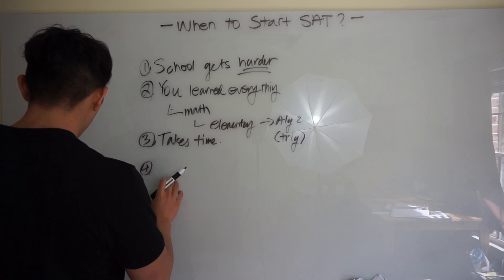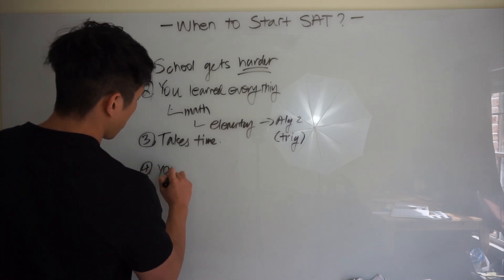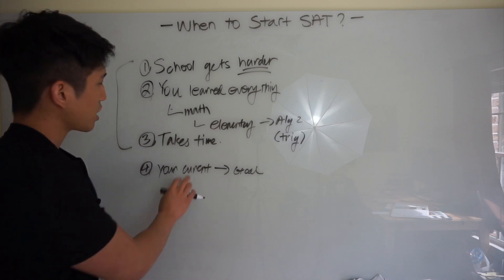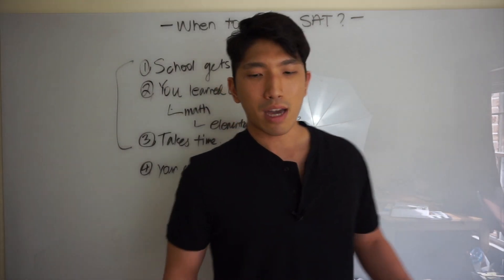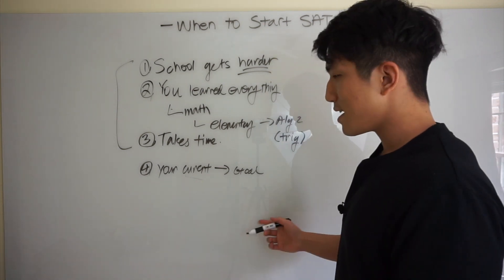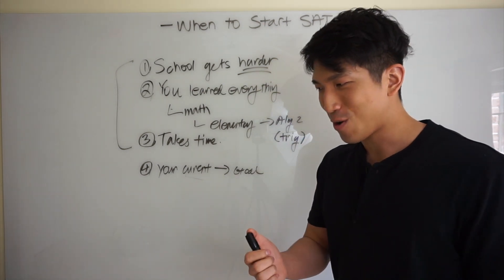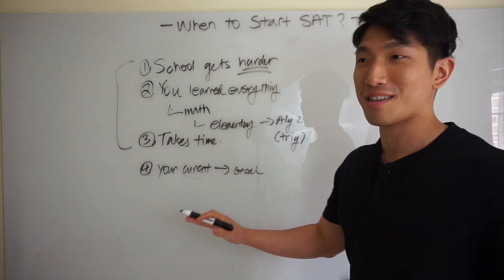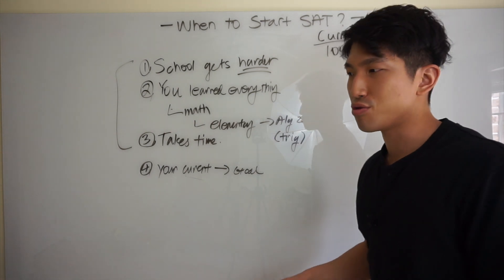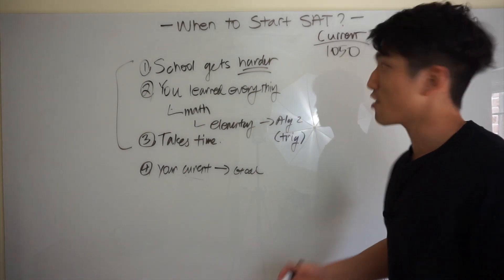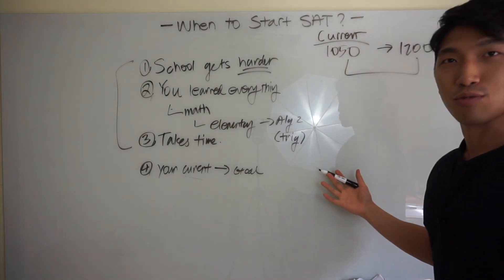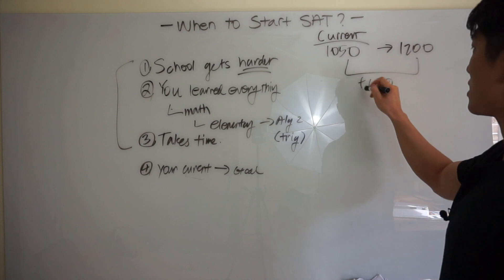Last reason for you to consider is your current score and your goal. Before you look into any of these three things, make sure you check, make sure you look into this. What does it mean by current and goal? Current just means your current score and your goal means what score you need. Let's say my score right now is 1050. And let's say I want to go to some XYZ school in my area and their average SAT score is 1200. Then right there is going to be a 150 point gap.